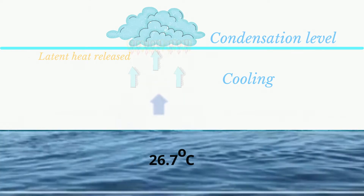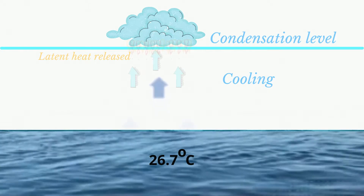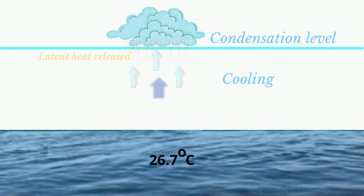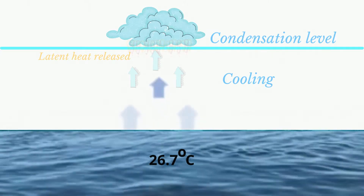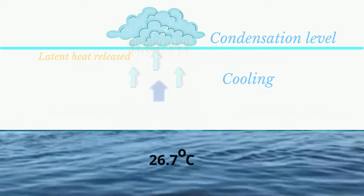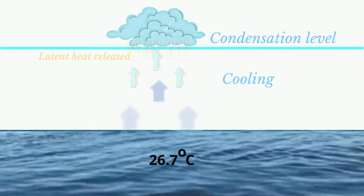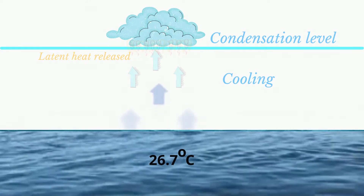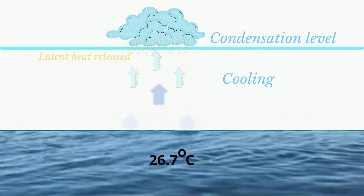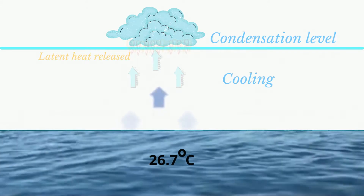Two main things will happen in the process of condensation. Firstly, the water vapor will be converted to water droplets, which will float as cumulus clouds in the sky. Secondly, latent heat, which was absorbed during the process of evaporation, will be released during condensation.